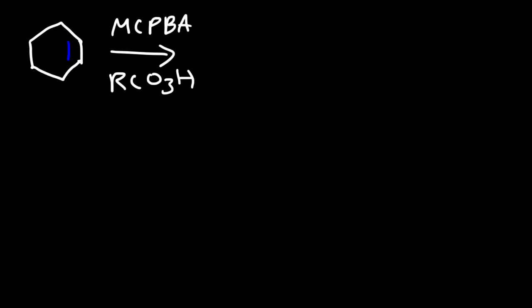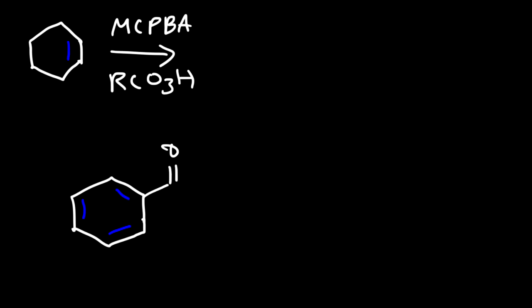Now, MCPBA, metachloroperoxybenzoic acid, has a benzene ring. And attached to this benzene ring, there's a peroxy acid group, which looks like this. And on the meta position, you have a chlorine atom. So that is the MCPBA molecule.